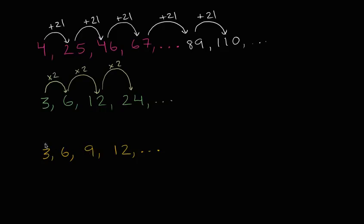But maybe I am just adding three here. So three to six, I just added three. Then six to nine, I add three again. And then nine to 12, I add three again. So this one actually does look like I'm just adding three every time.